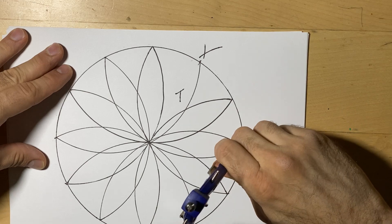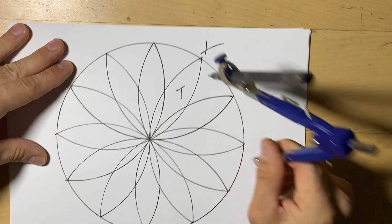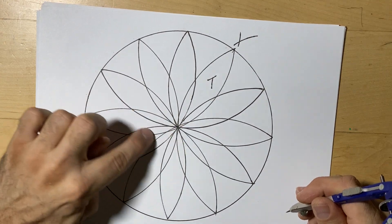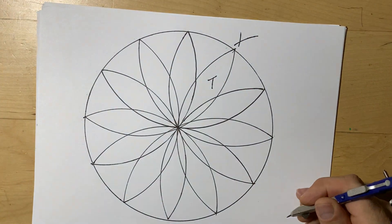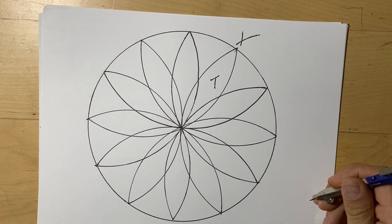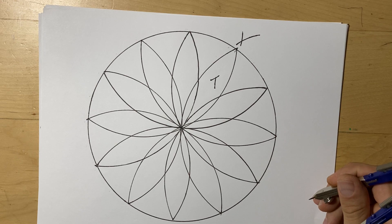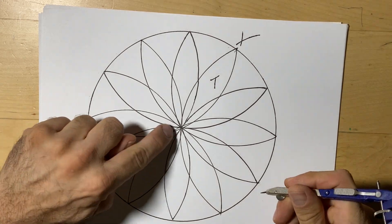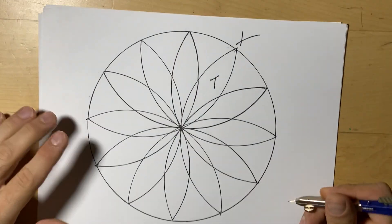So now we've doubled the number of seeds or petals. We went from six to twelve. There's twelve little ones and twelve larger ones. Of course you want to be careful with your compass. You could make little mistakes like here if you're not careful.